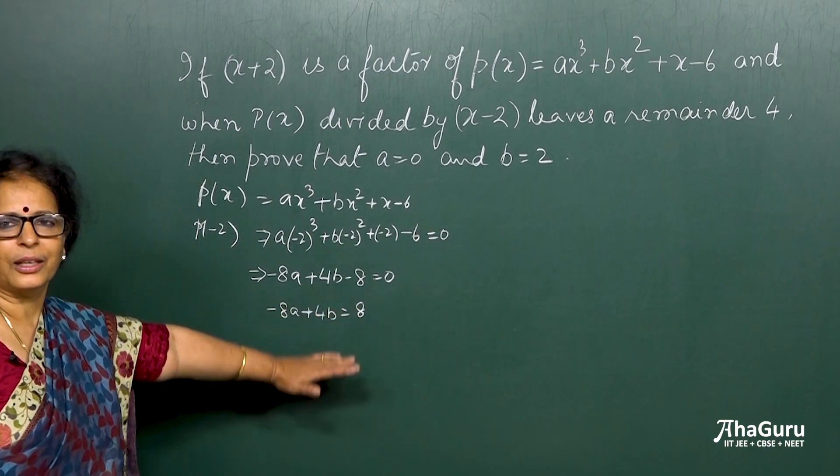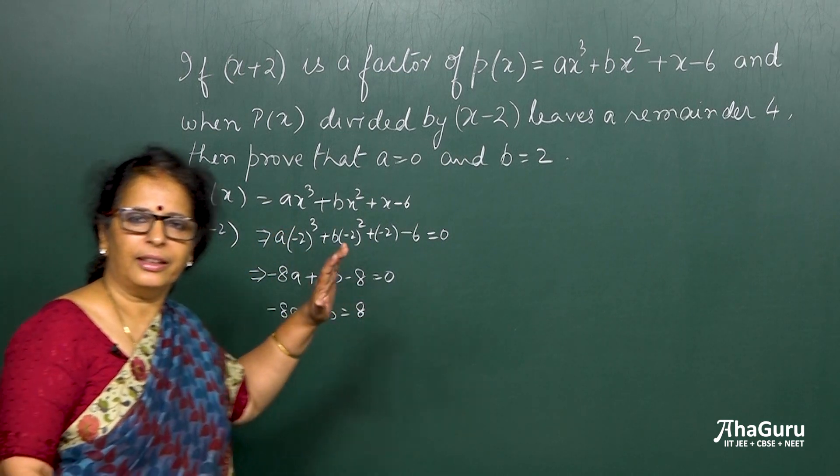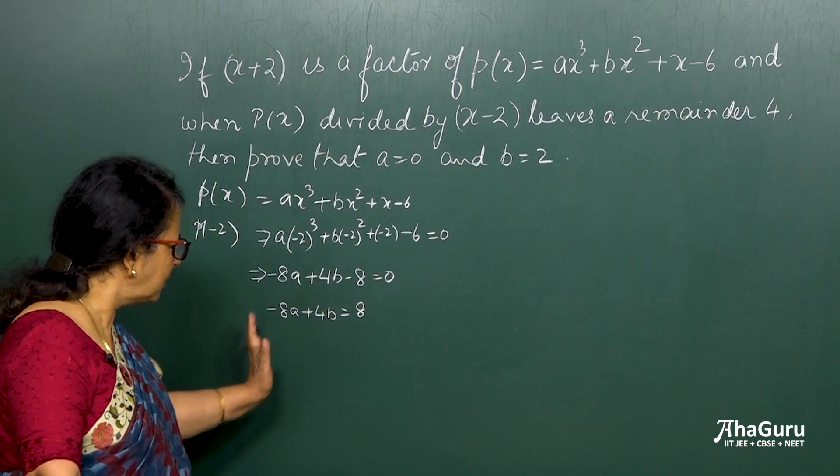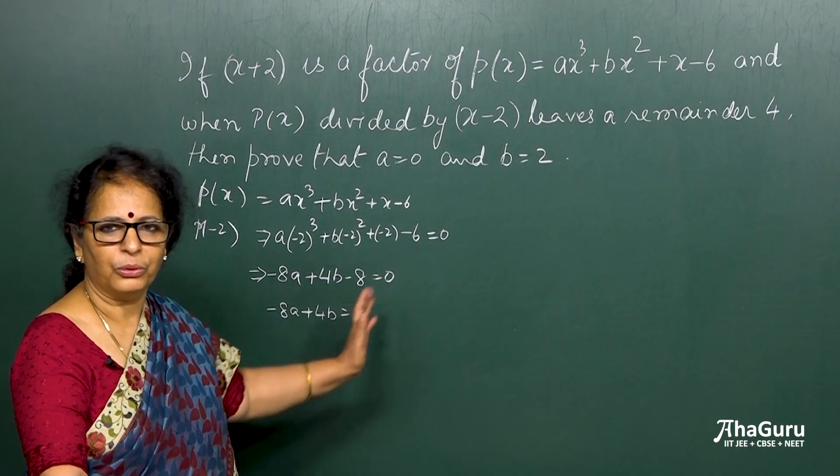So whenever you find a linear equation or any type of equation where both sides have the same factors, numbers, just divide it and make it a smaller one.